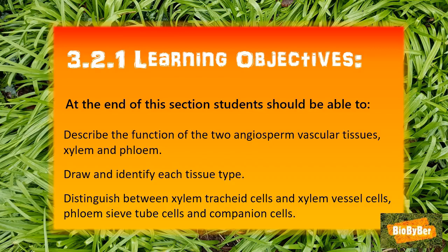Hi biologists. At the end of this section, following the biology syllabus, you should be able to describe the function of the two angiosperm vascular tissues — xylem and phloem — draw and identify each tissue type, and distinguish between xylem tracheid cells and xylem vessel cells, and between phloem sieve tube cells and companion cells.